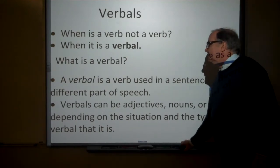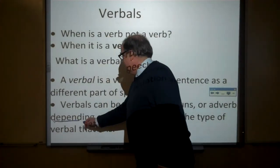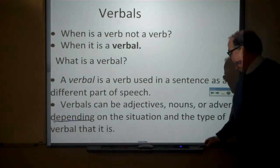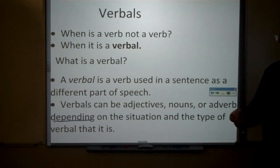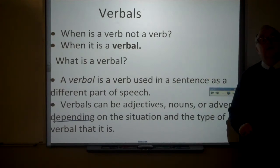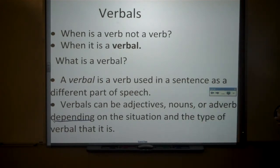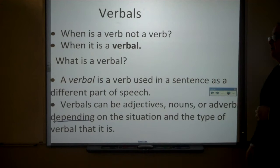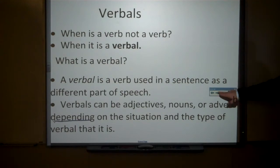In fact, if you think about it, that word 'depending' is a verbal. It comes from the verb to depend, but it is not the verb of the sentence. It doesn't have a subject. The verb is 'can be' — it's a linking verb. So that would be an example of a verbal.